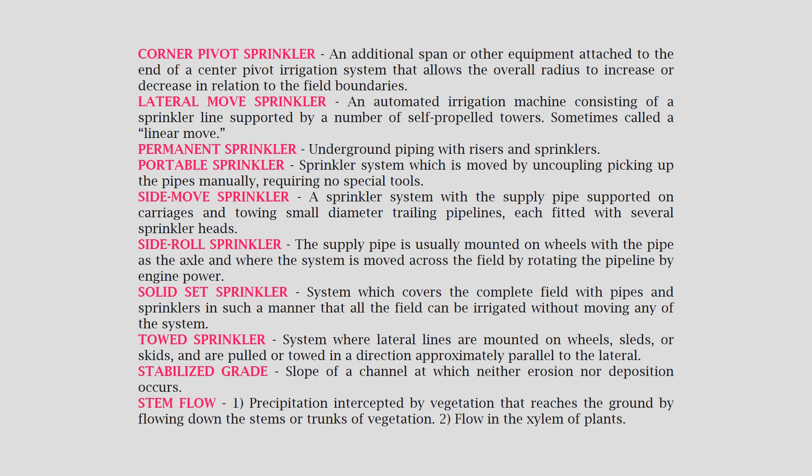Side move sprinkler: a sprinkler system with the supply pipe supported on carriages and towing small diameter trailing pipelines, each fitted with several sprinkler heads. Side roll sprinkler: the supply pipe is usually mounted on wheels with the pipe as the axle, where the system is moved across the field by rotating the pipeline by engine power. Solid set sprinkler: a system which covers the complete field with pipes and sprinklers such that all the field can be irrigated without moving any of the system.